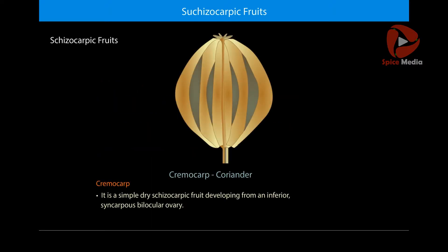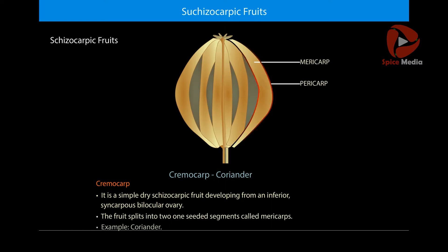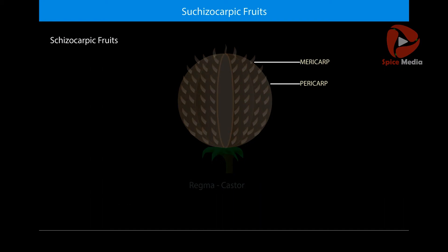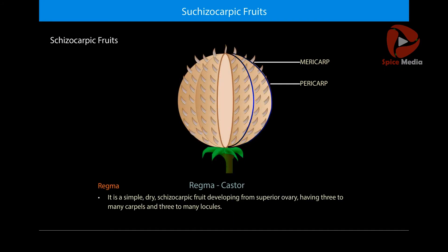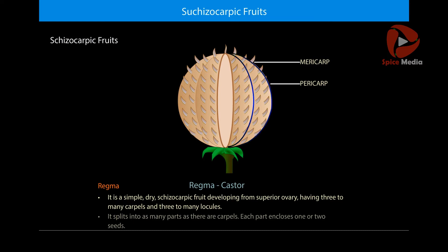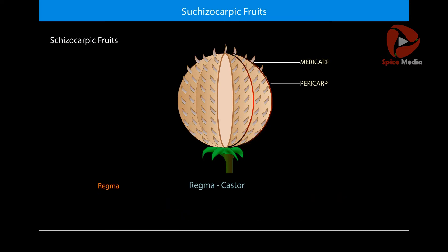Cremocarp is a simple dry schizocarpic fruit developing from an inferior syncarpous bilocular ovary. Rhettma is a simple dry schizocarpic fruit developing from a superior ovary having three to many carpels and three to many locules.